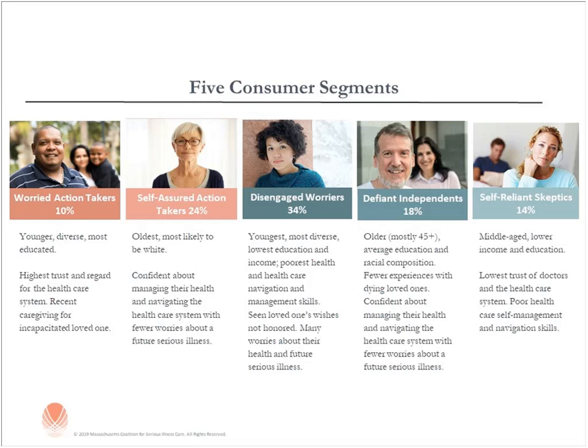Here's a summary of the five consumer segments. Worried action takers are the youngest, most educated, most diverse, with high trust and high regard for the healthcare system — about 44% identified as having a disability, and about 80% had cared for an incapacitated loved one and had to make decisions for someone else. Self-assured action takers are the classic retired, middle-to-upper income, disproportionately white couple — confident about managing their health and navigating the system, with few worries about future serious illness, having checked advanced care planning off their list. The disengaged warriors are our largest segment — about a third of the population — youngest, most diverse, lowest education and income, lowest self-reported health status, and just don't know where to start.